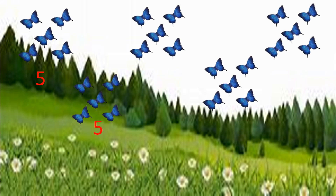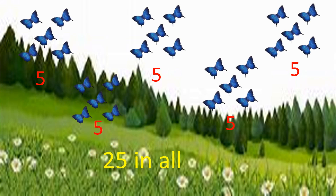What about the third group? One, two, three, four, five — also five butterflies. What about the fourth one? Also five butterflies. And the last one also has five butterflies. So we have five equal groups, and each group contains five butterflies. Let me use skip counting to find the total: five, ten, fifteen, twenty, twenty-five. We have twenty-five butterflies in all.